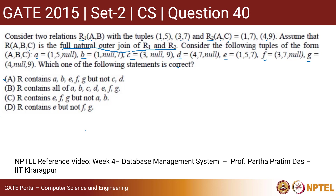The options are: R contains A, B, C, A, B, E, F, G but not C and D. R contains all of A, B, C, D, E, F, G. R contains E, F, G but not A and B. R contains E but not F, G.